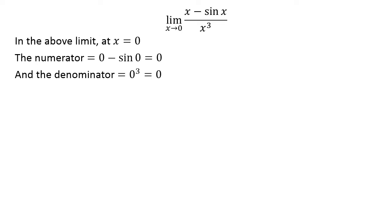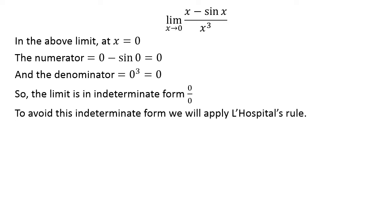In the above limit, as x equals 0, the numerator is 0 minus sin 0 equals 0, and the denominator is 0 cubed equals 0. So the limit is in indeterminate form 0/0. To avoid this indeterminate form, we will apply L'Hospital's rule.